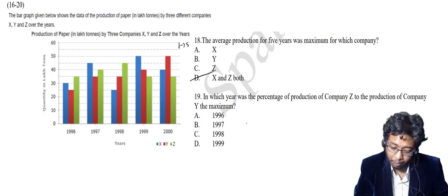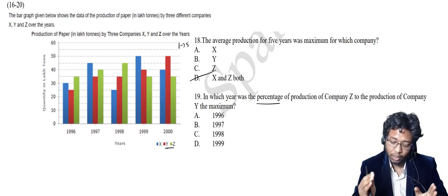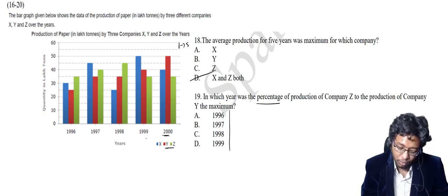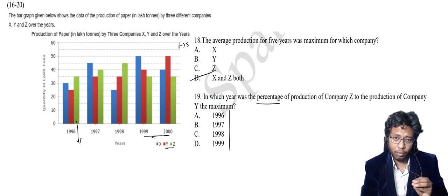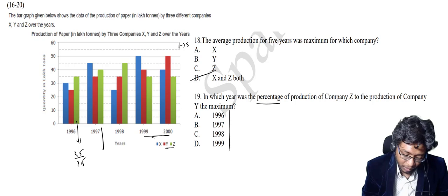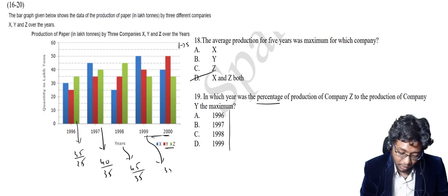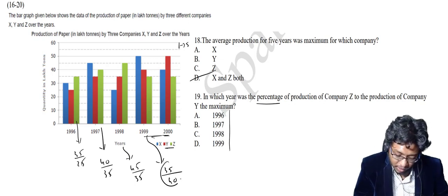In which year was the percentage production of company Z to the production of company Y maximum? Z to Y — I need to compare only Y and Z bars. The last year's comparison is not required since Z decreases relative to Y there. So directly write: from 1996 to 1997 it is 35 by 25, from 1997 to 1998 it is 40 by 35, and from 1998 to 1999 it is 45 by 35. For the year where Z falls below Y, that is a decrease, so neglect it.